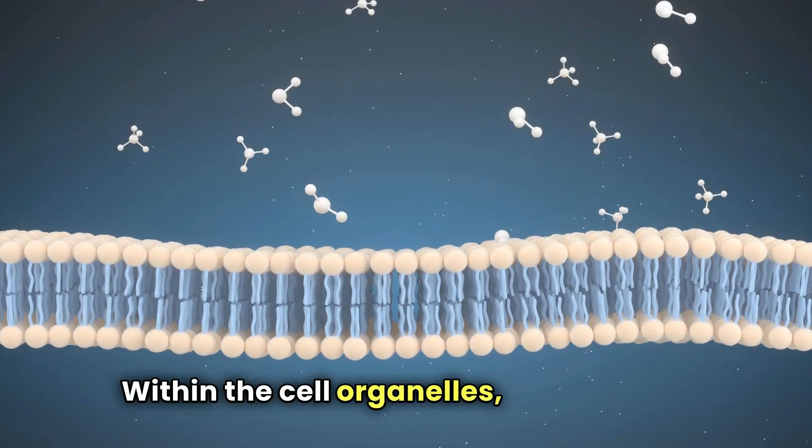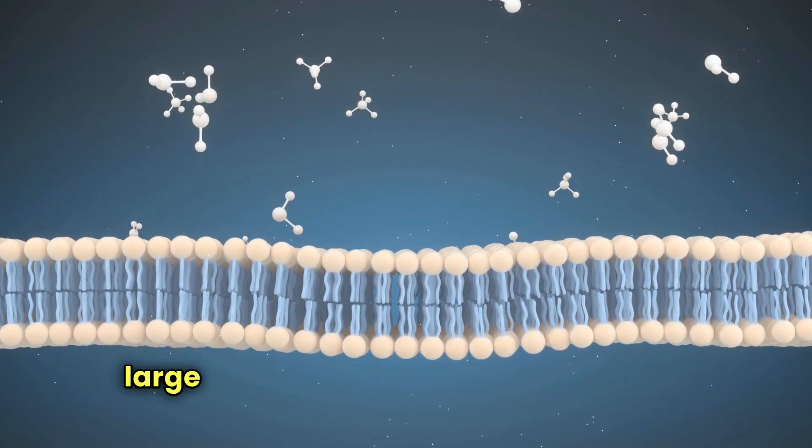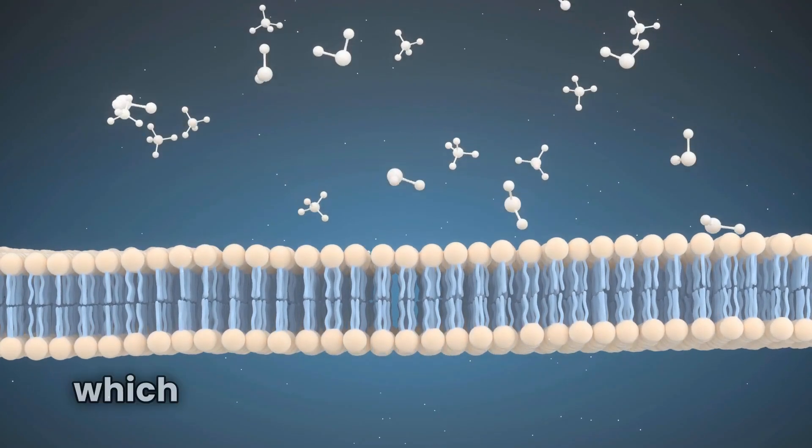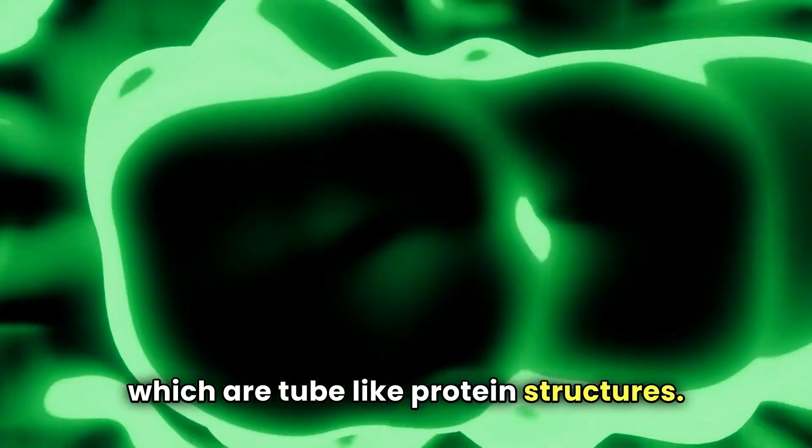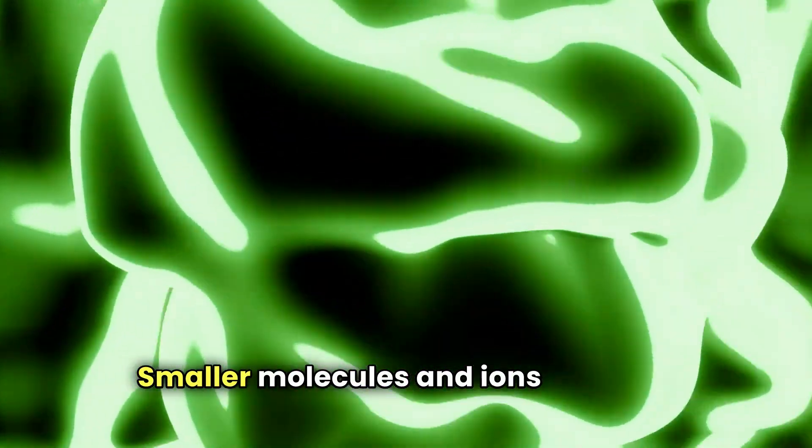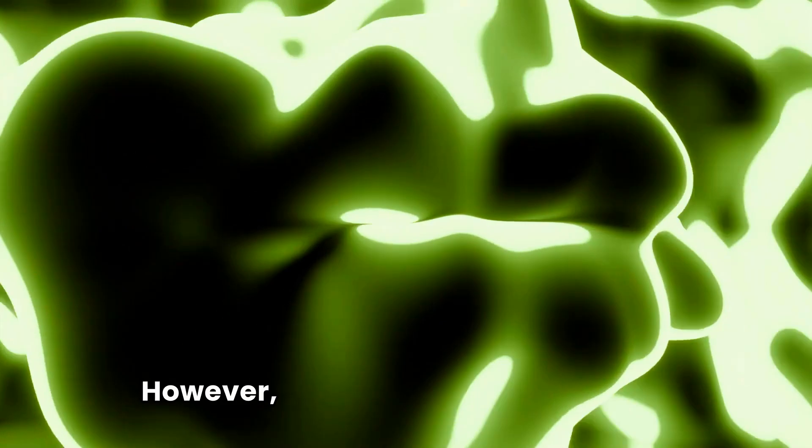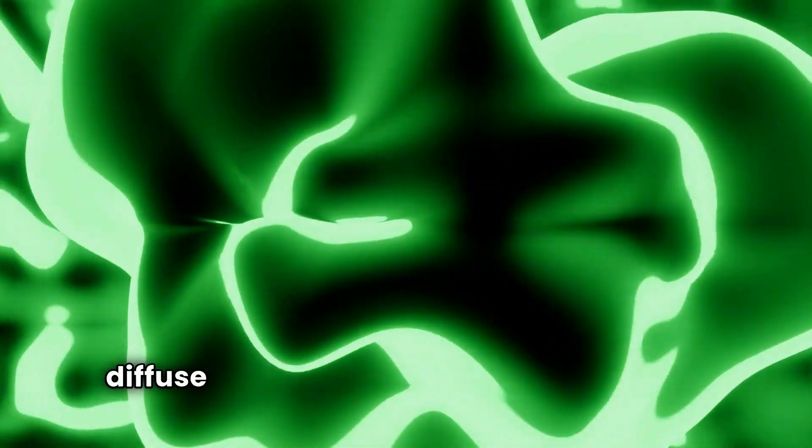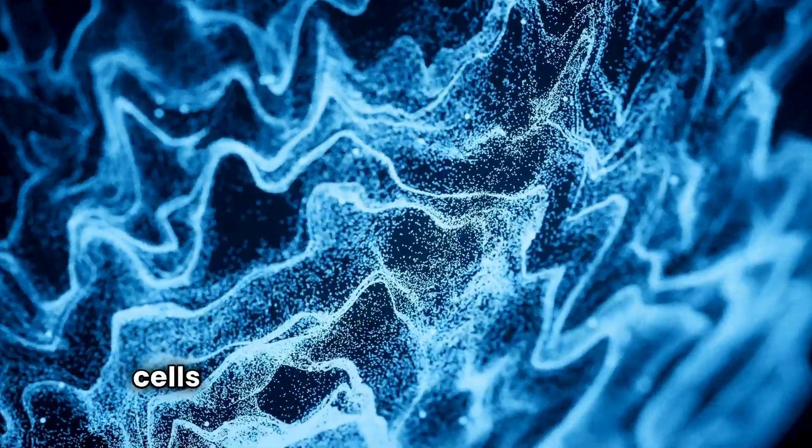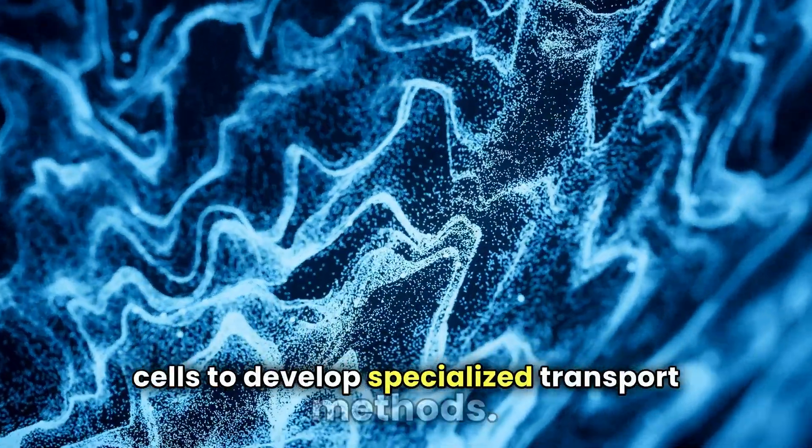Within the cell, organelles, vesicles, and large molecules are transported along microtubules, which are tube-like protein structures. Smaller molecules and ions move by diffusion. However, only a few substances can diffuse directly through cell membranes, prompting cells to develop specialized transport methods.